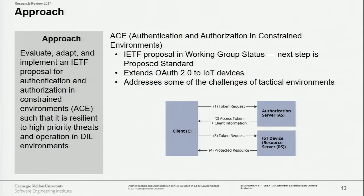This was a one-year exploratory lens project. Instead of starting from scratch, we started from an existing standard proposal from IETF — the Internet Engineering Task Force — called ACE, which stands for Authentication and Authorization for Constrained Environments. We chose it because it already provided a lot of what we needed, was still in working group status and could be influenced, extends OAuth 2.0, and begins addressing some challenges of tactical environments.